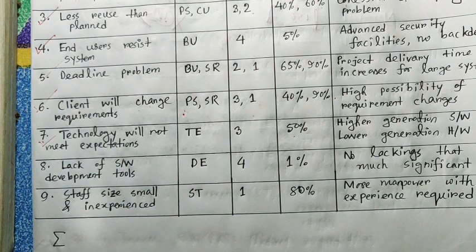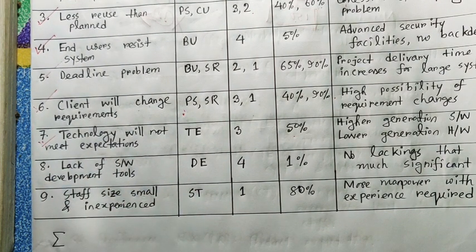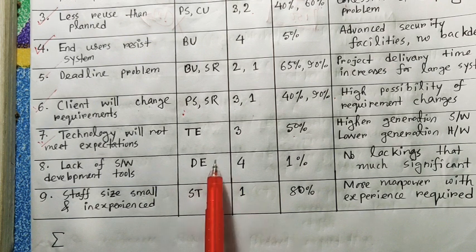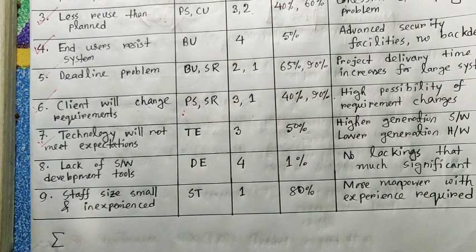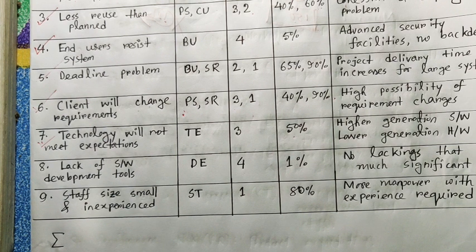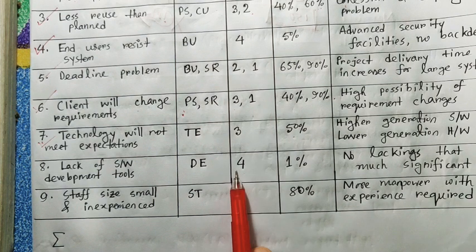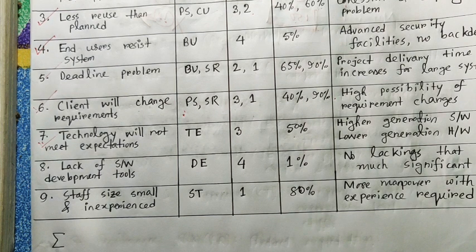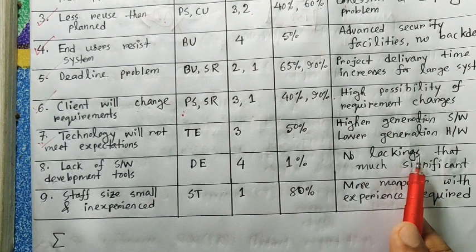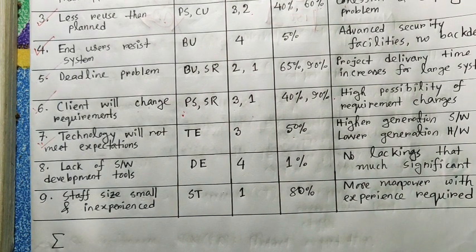Let's move on to the next number. The lack of development tools — the development tools will be available for the software. You have to use the framework, language selection. The impact factor is 4, which is good in the poor generation. The probabilities are low — 0.03 or 30% of customers are rising. There is no significant lacking.